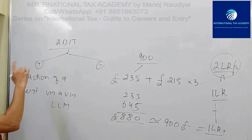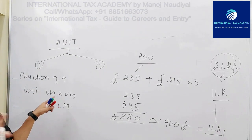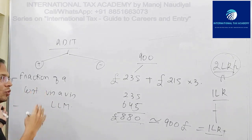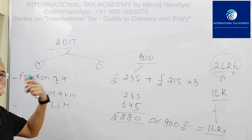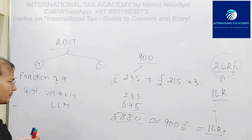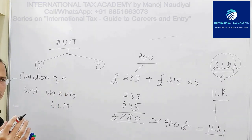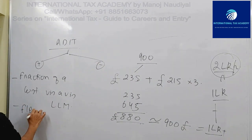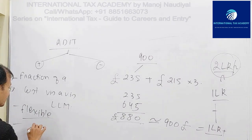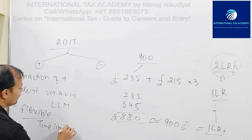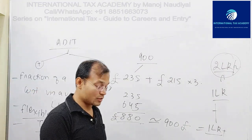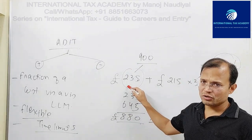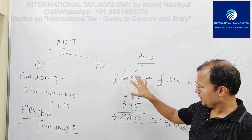Another advantage: unlike an LLM, you don't need to take a one-year break. ADIT is completely flexible. Whether you are a student or a working professional, you can pursue the ADIT certification alongside whatever you are currently doing. The time limit is five years, because the 235-pound registration fee is valid for five years, as stated in the CIOT prospectus.